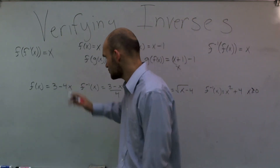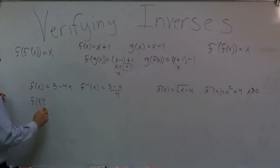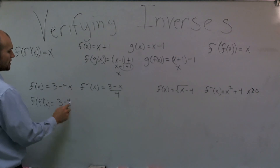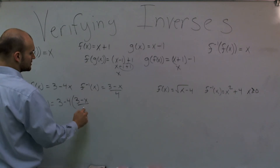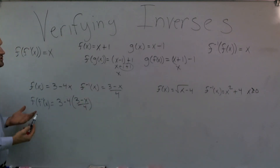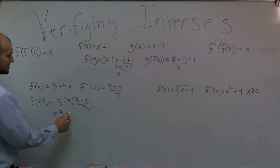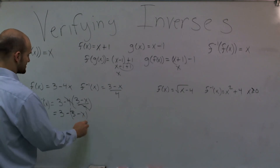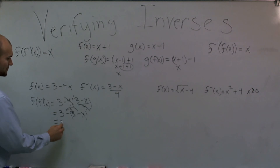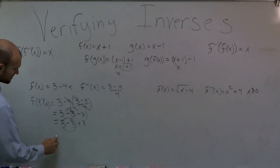For the first problem, I take my inverse function and plug it into f(x). So f(f⁻¹(x)) equals 3 minus 4 times (3 − x)/4. The 4s cancel out, leaving me with 3 − (3 − x). Applying the distributive property of the negative, that's 3 − 3 + x, those cancel out, and I'm left with x.